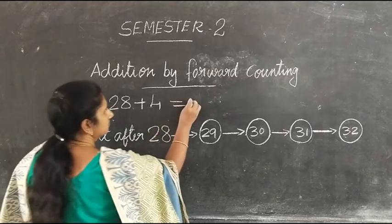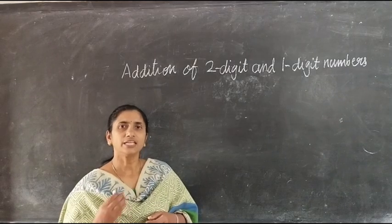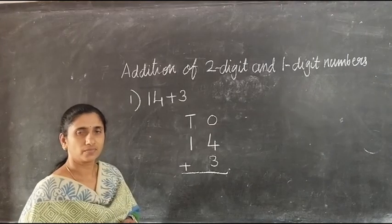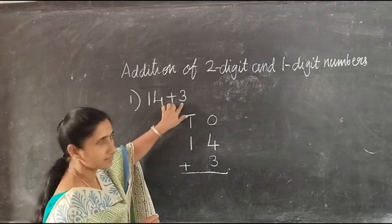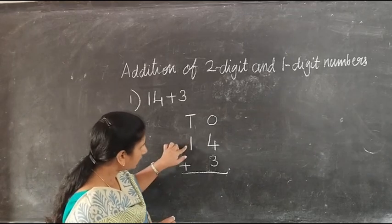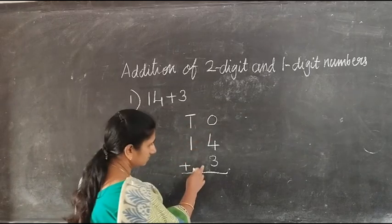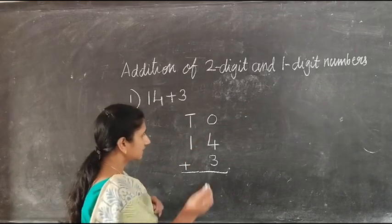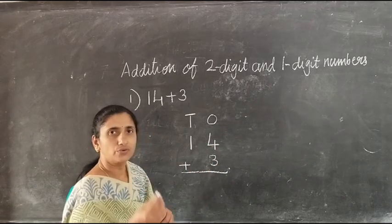Our next topic is addition of 2 digit and 1 digit numbers. Our first question is: add 14 and 3. Here first we have to write 14 and 3 in the tens and ones columns like this. Next step, add the ones, that is 4 and 3.